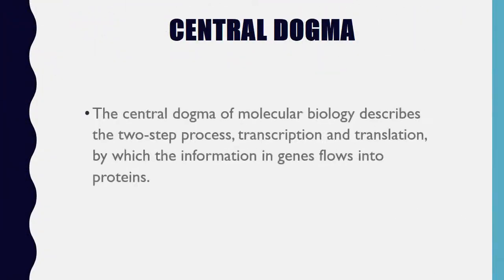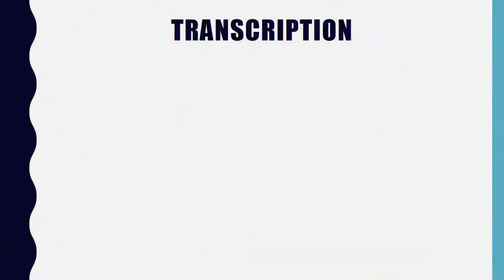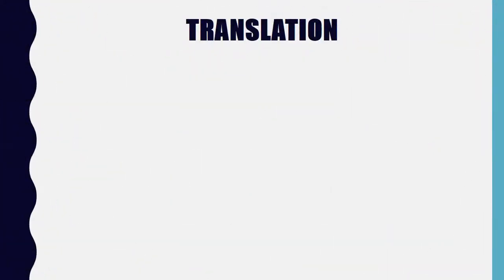Central Dogma: the central dogma of molecular biology describes the two-step process — transcription and translation — by which the information in genes flows into proteins: DNA to RNA to protein. Transcription is the first step of gene expression, in which a particular segment of DNA is copied into messenger RNA (mRNA) by the enzyme RNA polymerase.